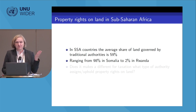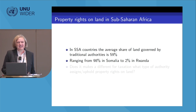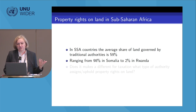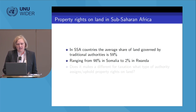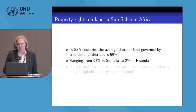Looking at the situation empirically in sub-Saharan Africa, the average share of land governed by traditional authorities is about 60%, based on data by Liz Alden Wily and colleagues who work extensively on Africa's land situation. What is good for statistical analysis is that there is a lot of variation in this data — from 96% in Somalia to only 2% in Rwanda — and I'm taking this from the last data point in our dataset, which is 2015.